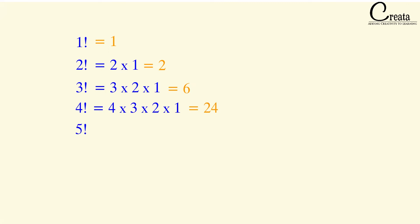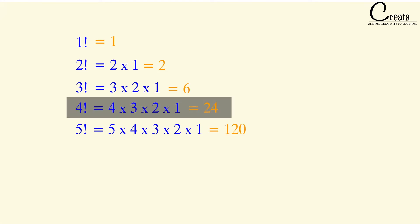What is 5 factorial? Take your pen and paper and try to solve it. 5! = 5 × 4 × 3 × 2 × 1 = 120. If you already know 4! = 24, you can calculate 5! as 5 × 4! = 5 × 24 = 120.